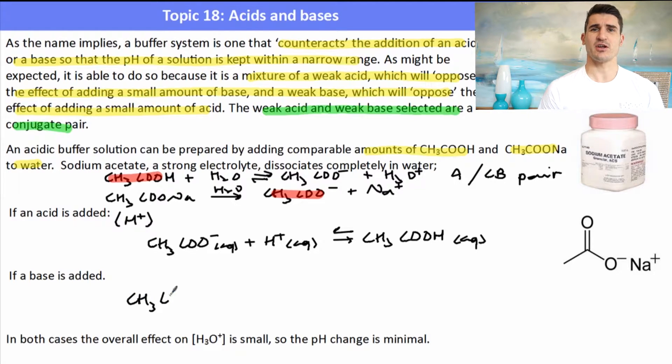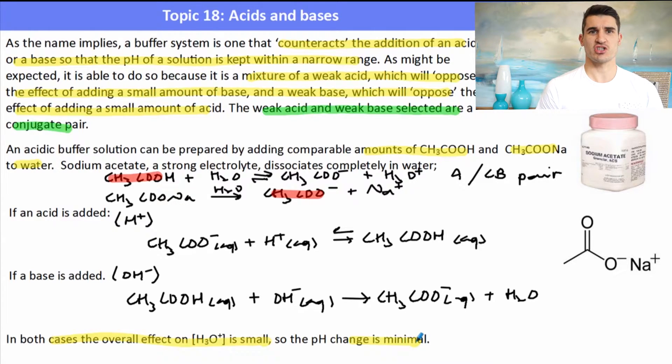If a base is added, well we've got the ethanoic acid which is an acid that can start to neutralize the base. Don't forget that just because it's a weak acid doesn't mean it won't neutralize all the base that is added. As long as we have enough of it, it will keep neutralizing that base until it's all gone. In either case, the addition of either acid or a base to a buffer will limit the overall change in pH. So the concentration change of the H3O plus will be quite small.